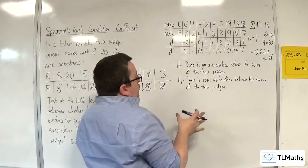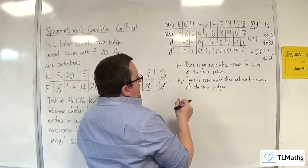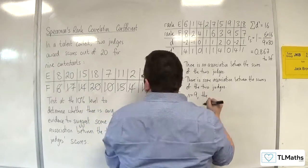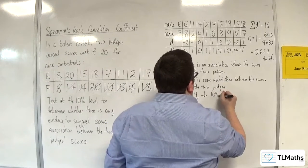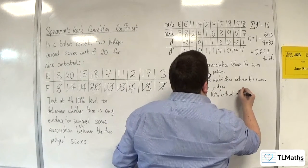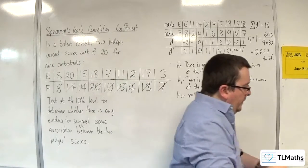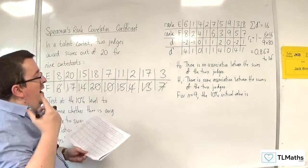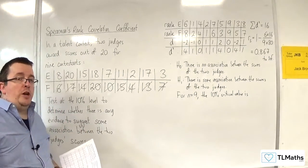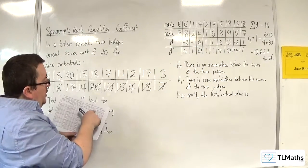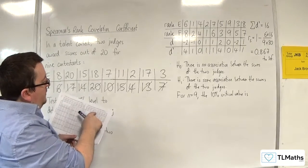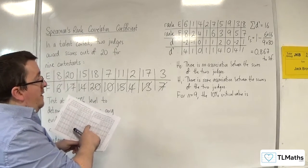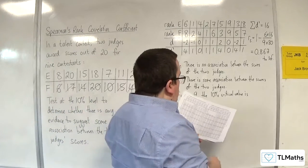Now we need to find our critical value. For n equals 9, and we're going with a 10% level. The tables are on page 12. We're looking at the right-hand side. Because we've got some association, this is a two-tail test. You need to look at two-tail, and then go to the left until you hit 10%. Then you need to go down until you hit n equals 9, which is 0.6000.